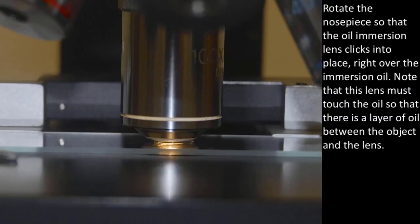Rotate the nose piece so that the oil immersion lens clicks into place right over the immersion oil. Note that this lens must touch the oil so that there is a layer of oil between the object and the lens.